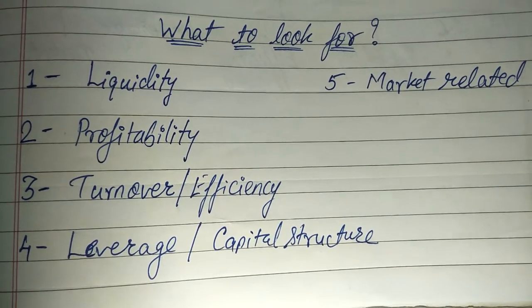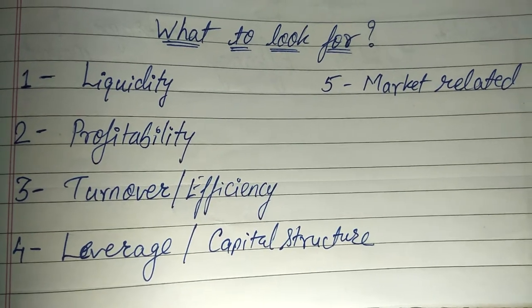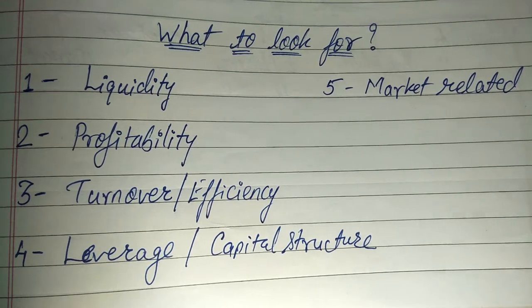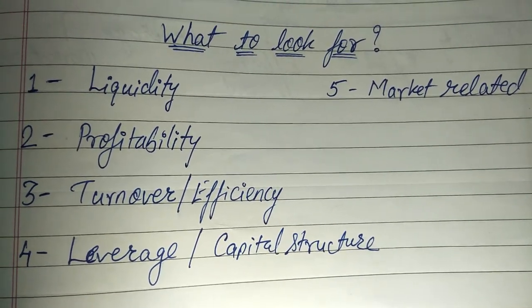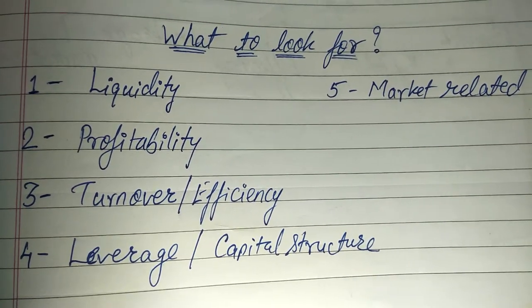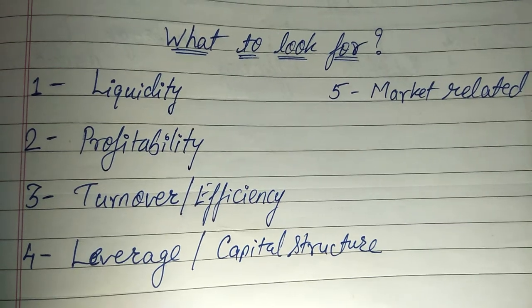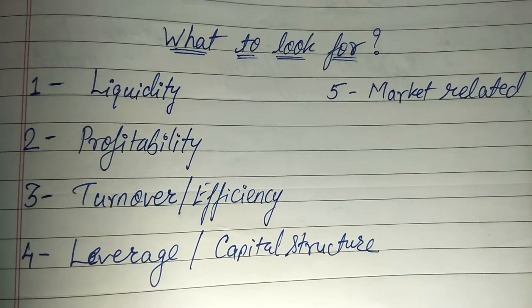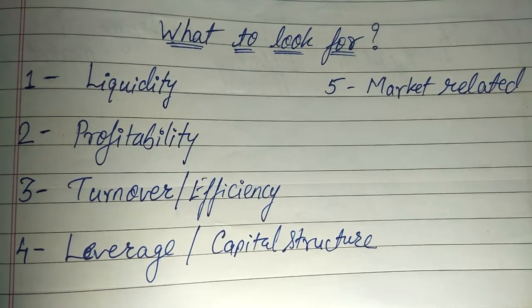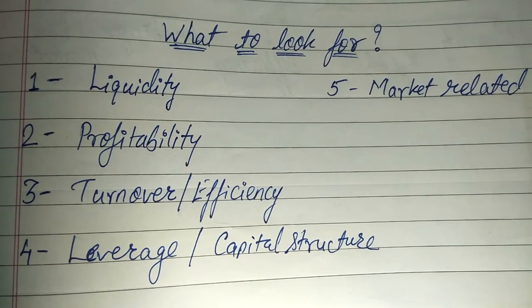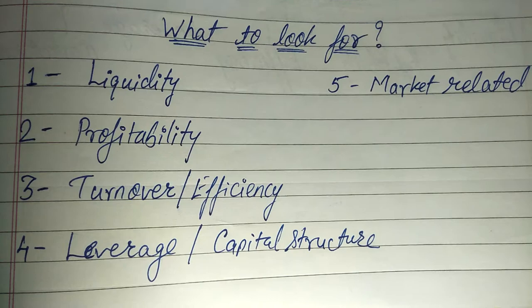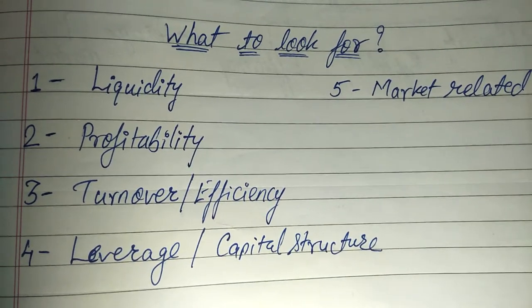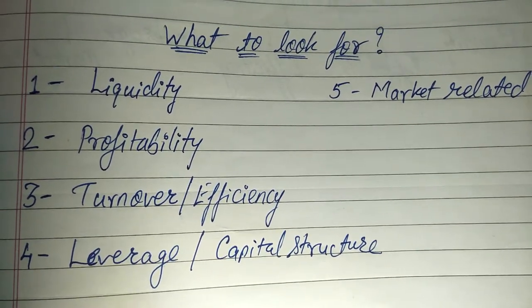Hello friends. In the previous video, that is the financial statement analysis part one, we have seen what exactly financial statement analysis means, which statements need to be analyzed to have an overall view of the financial position of a company. We have also seen who the analysts and stakeholders are — investors, moneylenders, owners or managers, suppliers, creditors, and employees — and why each of them needs to analyze the financial position of a company.